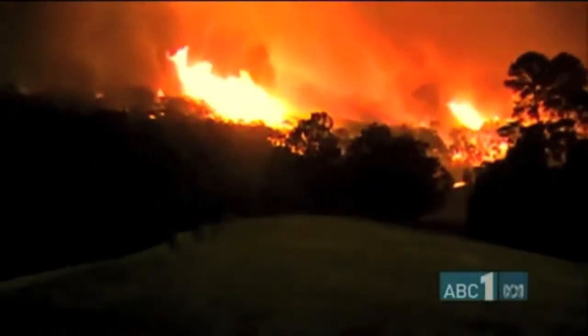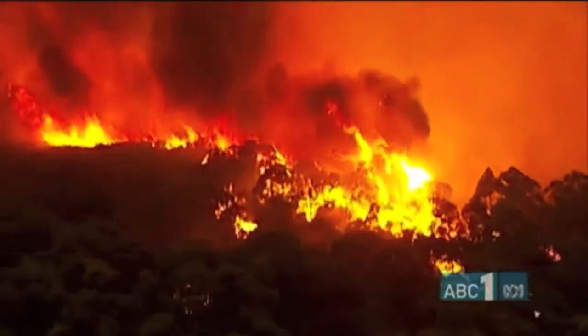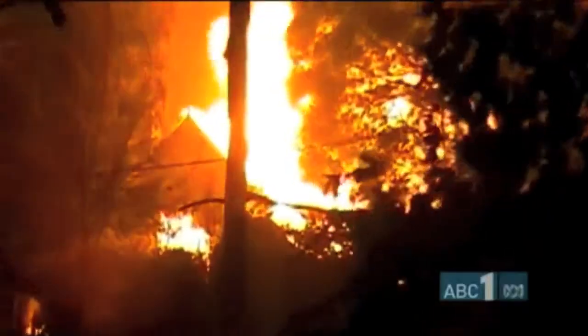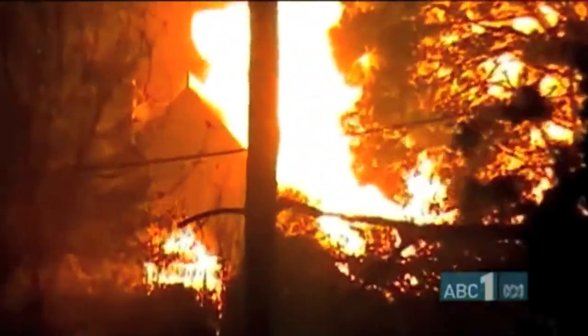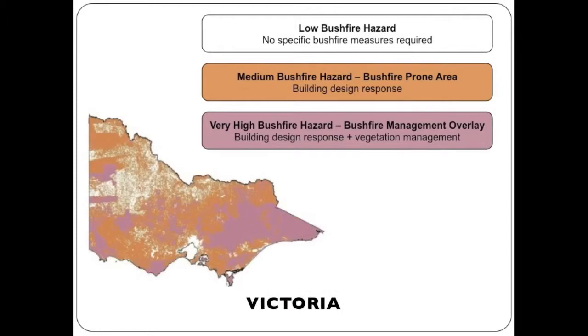The BMO came out of recommendations from the Victorian Bushfires Royal Commission in 2009. The BMO is a map that divides land in Victoria into three bushfire threat categories and is now part of the Victorian planning provisions.